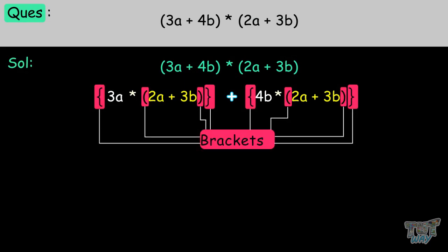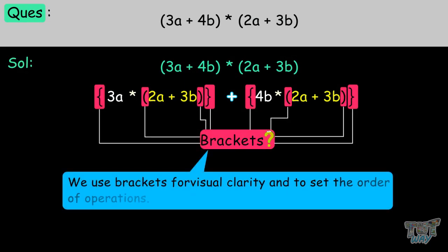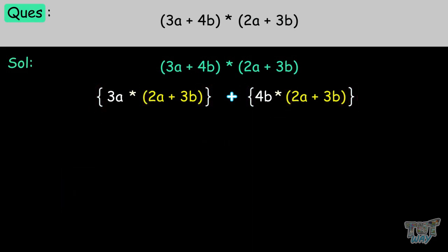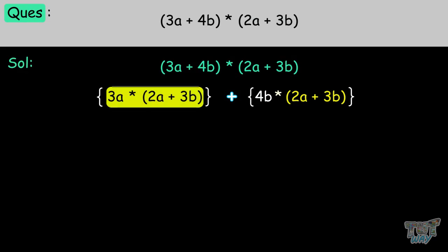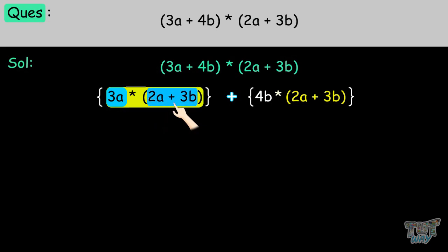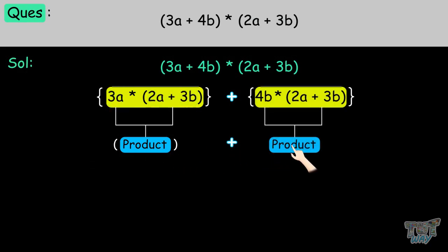We use brackets for visual clarity and to set the order of operations. Order of operations says that we have to first solve everything in the bracket. Here we have 3A times (2A plus 3B), which is a simple multiplication of a monomial with a binomial. The same applies for 4B times (2A plus 3B) — we have to find the product.